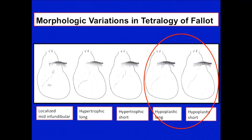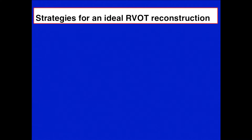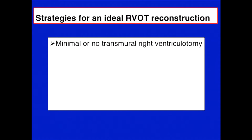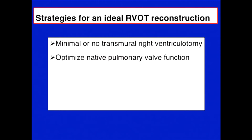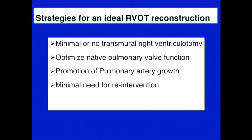In order to perform the transannular patch, what are the ideal strategies to adopt? You want to have minimal or no transmural right ventriculotomy, since large ventriculotomy is known from the literature to cause significant problems. You want to optimize native pulmonary valve function so it lasts long, promote growth of the pulmonary artery, minimize the need for re-intervention in the future, and minimize late morbidities from surgical intervention.